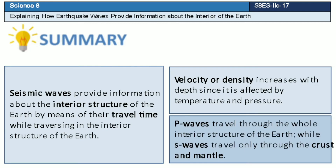In summary, seismic waves provide information about the interior structure of the Earth by means of their travel time while traversing its interior. Velocity or density increases with depth since it is affected by temperature and pressure. Lastly, P waves travel through the whole interior structure of the Earth, while S waves travel only through the crust and mantle.